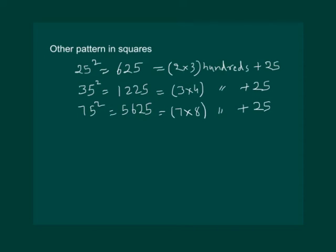Then what should be 125 whole square? According to the pattern, that should be 12 into 13, 100 plus 25, which will come out to be 15625. You can verify this using a calculator. And now we can find square of any number with unit digit 5.